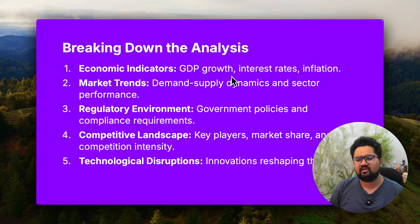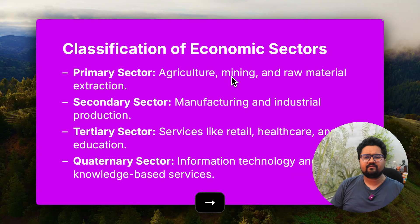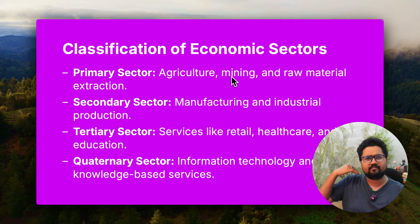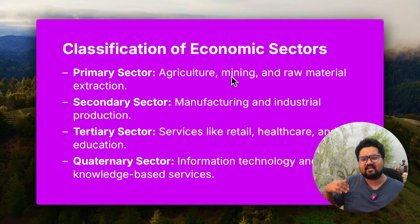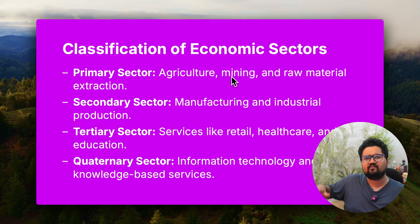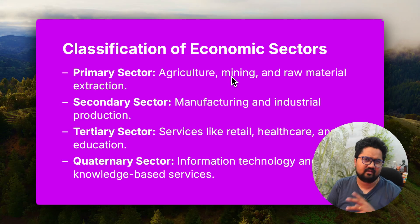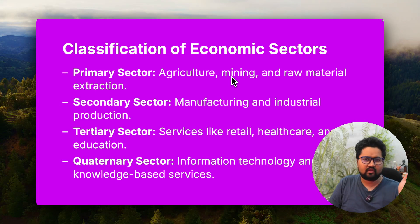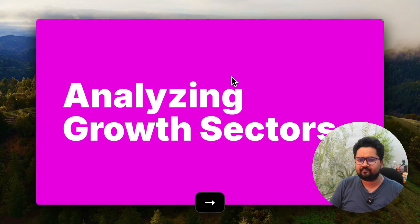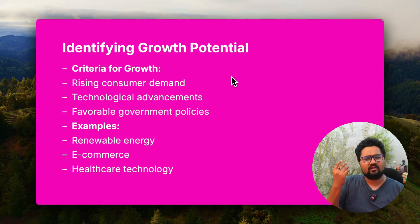Finally, technology — AI is a big disruptor right now. Types of sectors: the primary sector is always agri, mining, raw materials. Secondary sector is manufacturing and industrial production. Tertiary is retail and healthcare. And finally, knowledge-based and information services. Different sectors have different cycles and demand patterns — for example, within manufacturing, automotive might differ from two-wheelers or electrical categories.